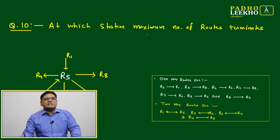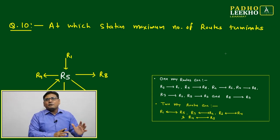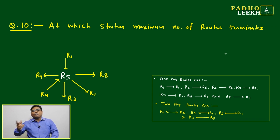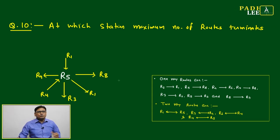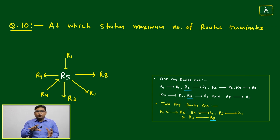Question number ten: at which station does the maximum number of routes terminate, or which station has the maximum combined incoming and outgoing routes? We look at which station is most frequently mentioned across all given one-way and two-way routes. By observation, R5 appears to be involved the most — let's verify.